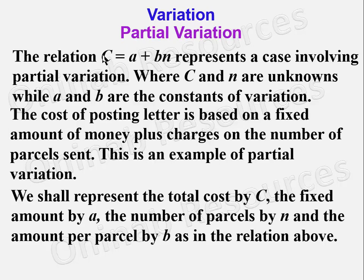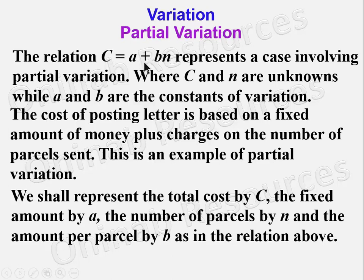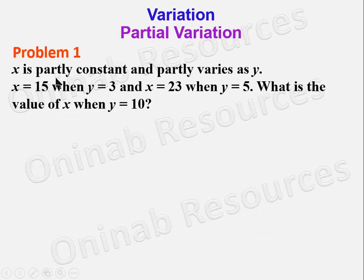It could also be the cost of making a call, represented by c, based on a fixed cost and a variable cost b, where the number of seconds is represented by n. It could be the cost of sewing clothes where c is the cost, a is the fixed amount of money, b is the fixed cost per hour, and n is the number of hours spent sewing. In any case, a is the fixed cost, b is the unit cost, and n represents either the number of hours, seconds, parcels, and so on. We now take our first problem on partial variation.